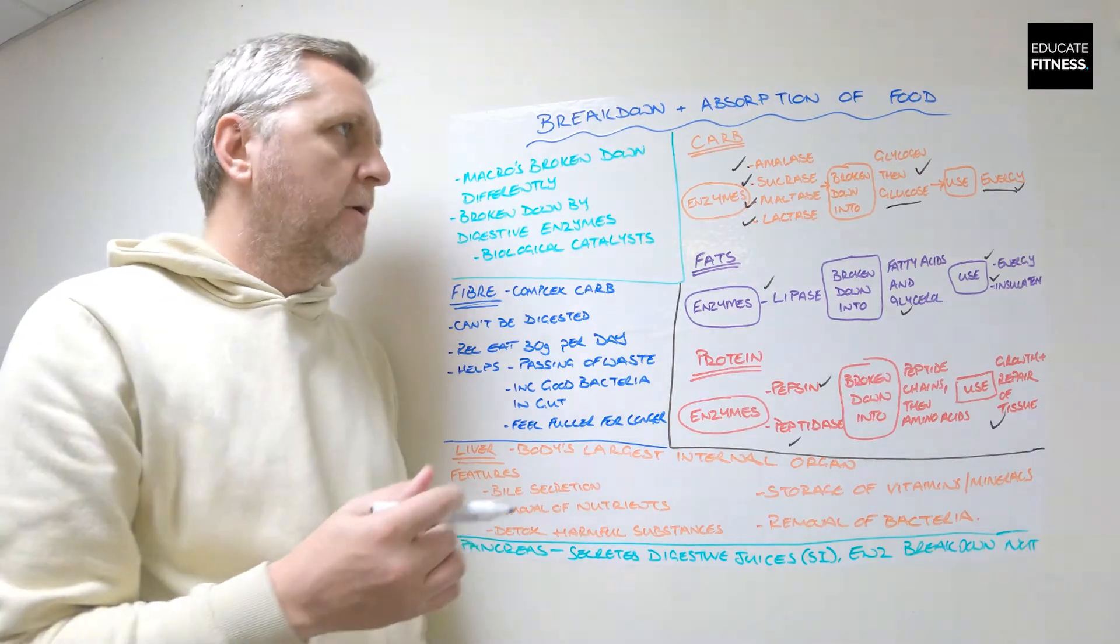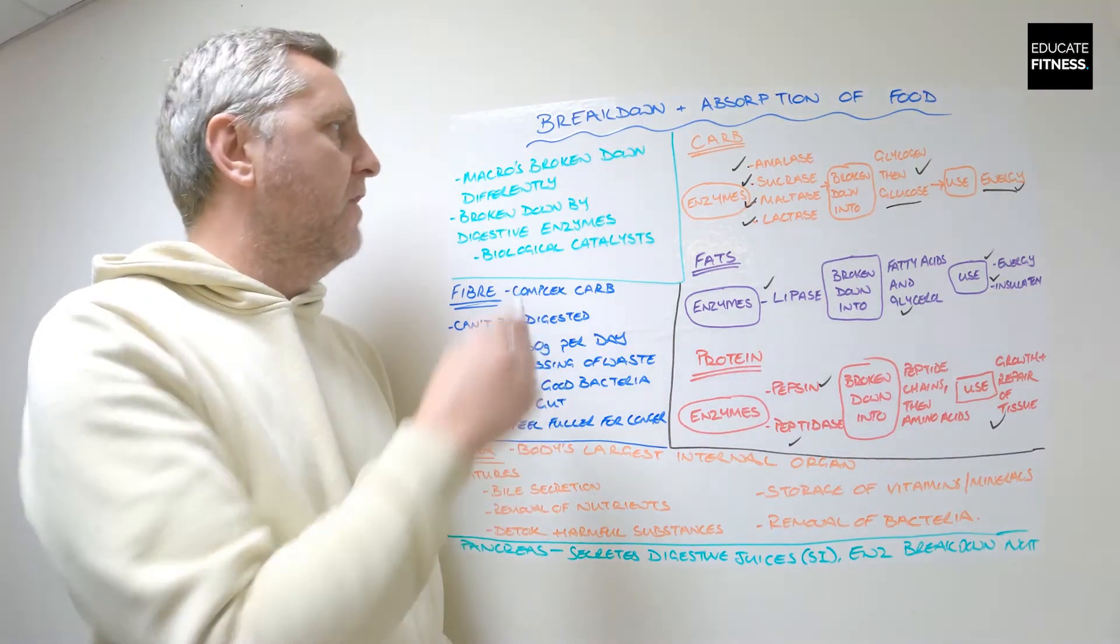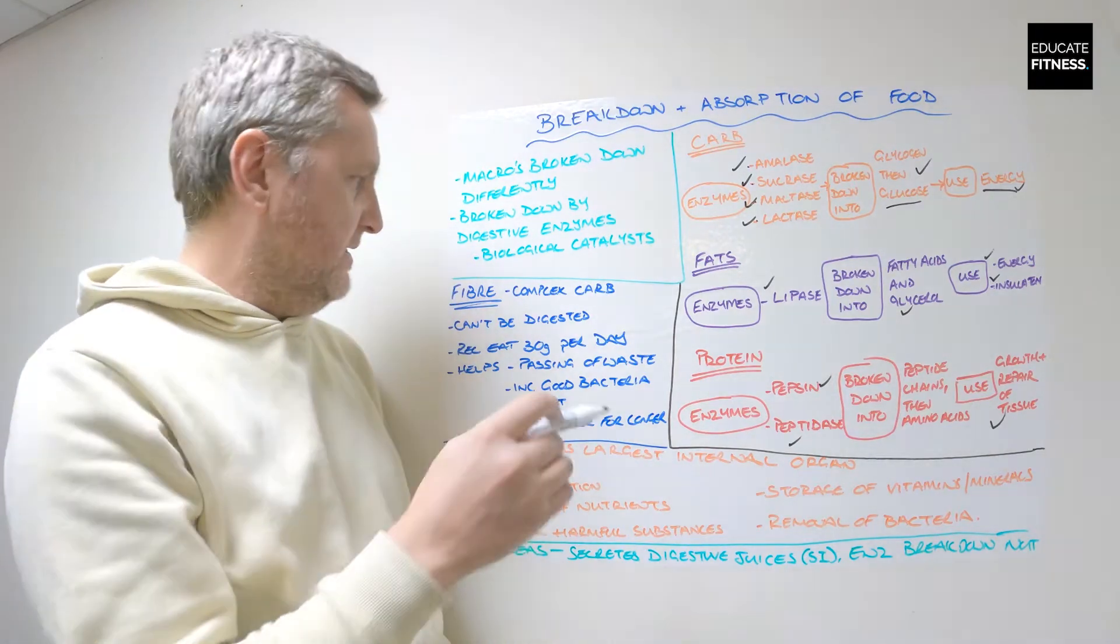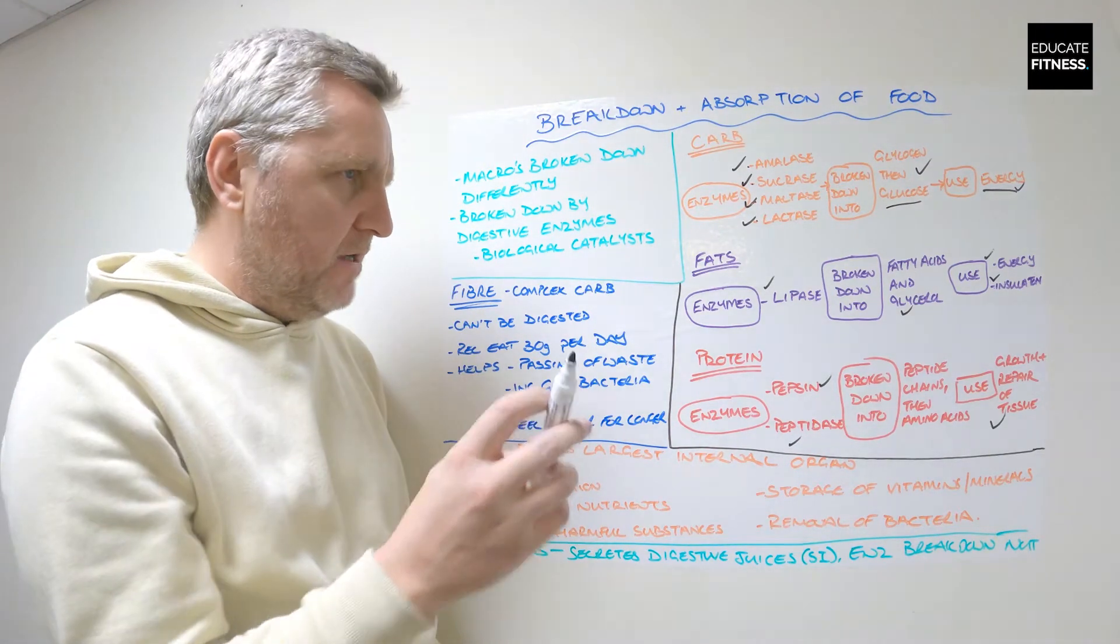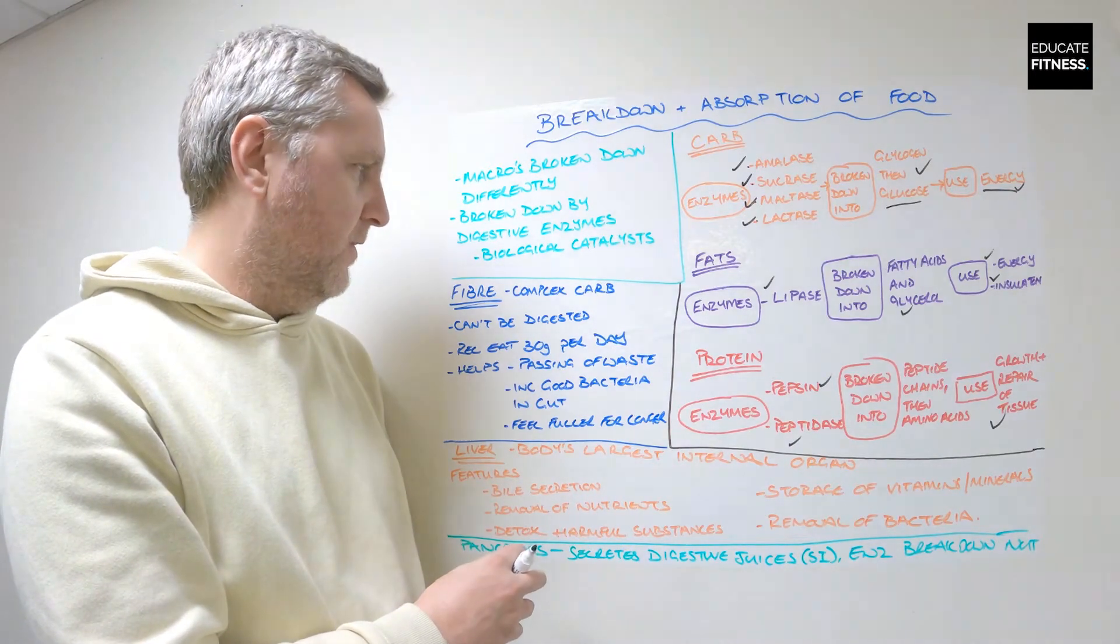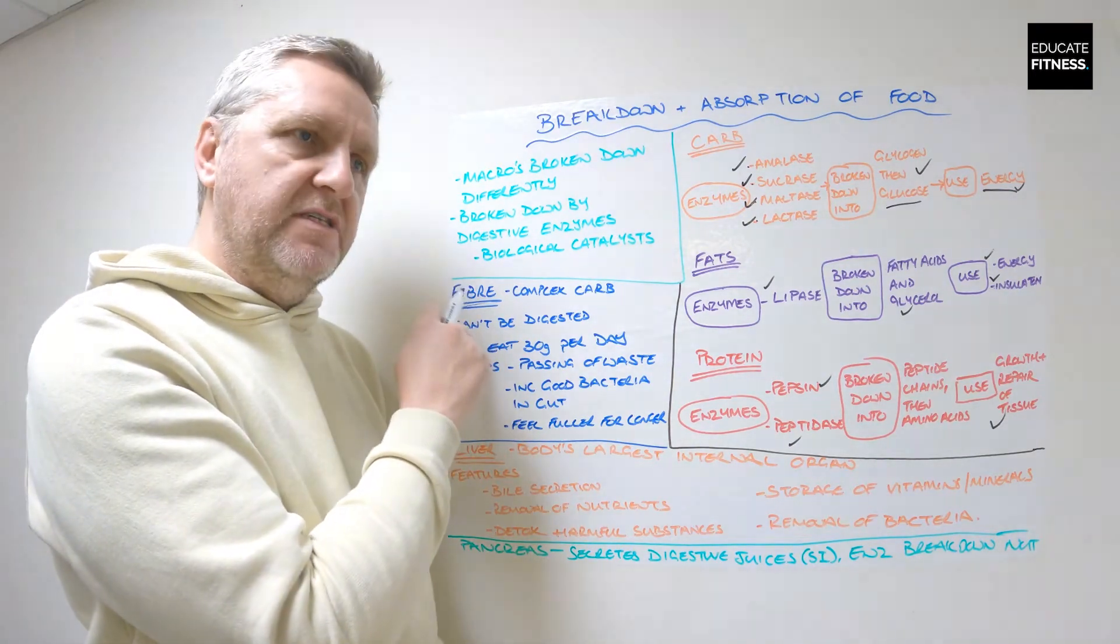So that is the breakdown of the macronutrients. What I want to finish on here is discussing fiber and then a short word on the liver and also the pancreas. Fiber first because this is important.